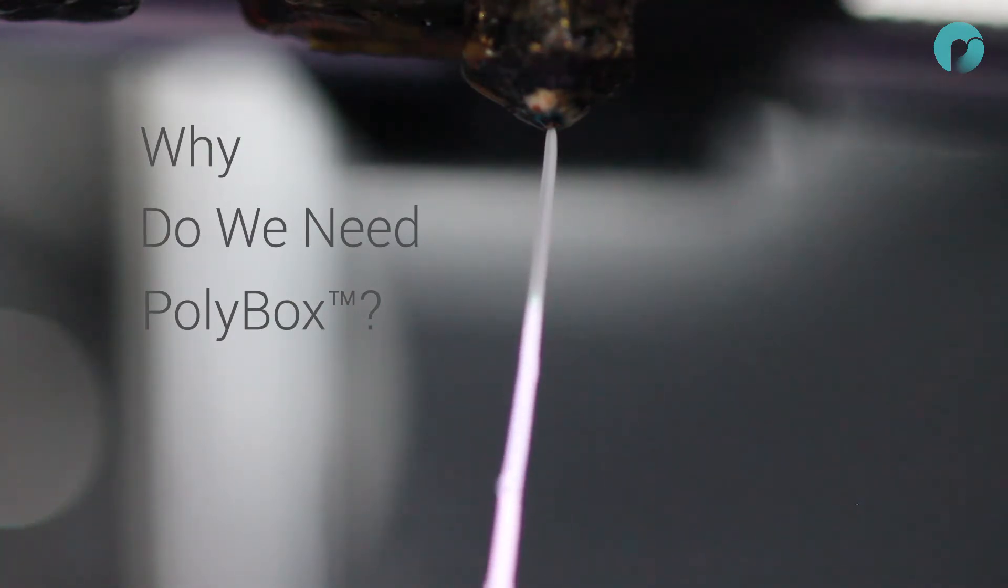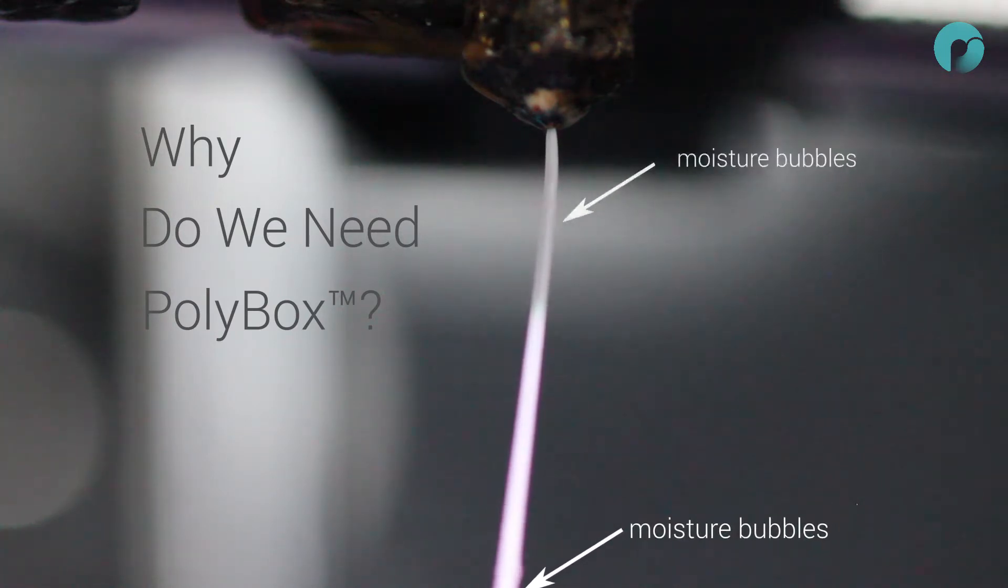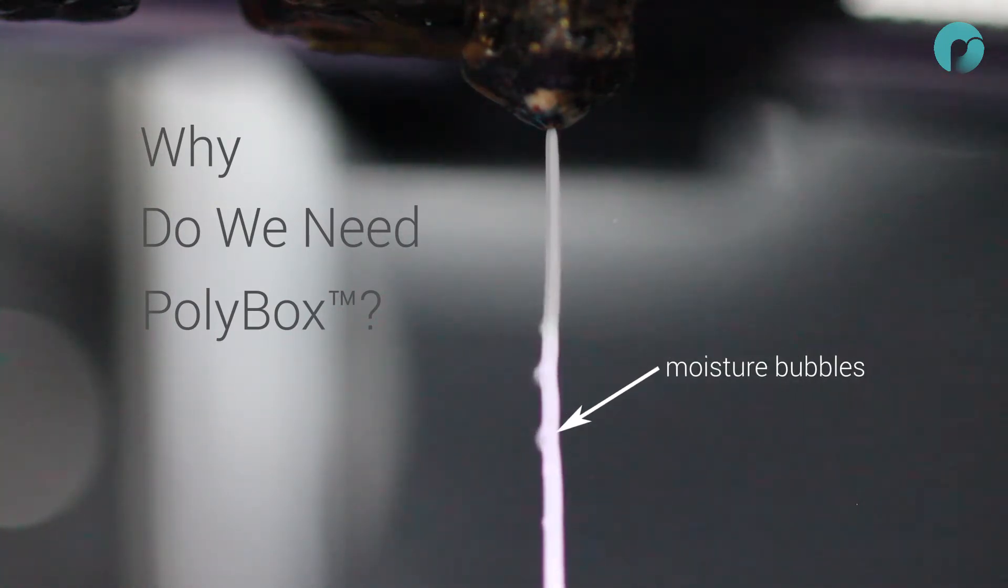When the filament then passes through the hot end, the moisture boils, expands and ruptures the filament, ruining the surface quality of your print.